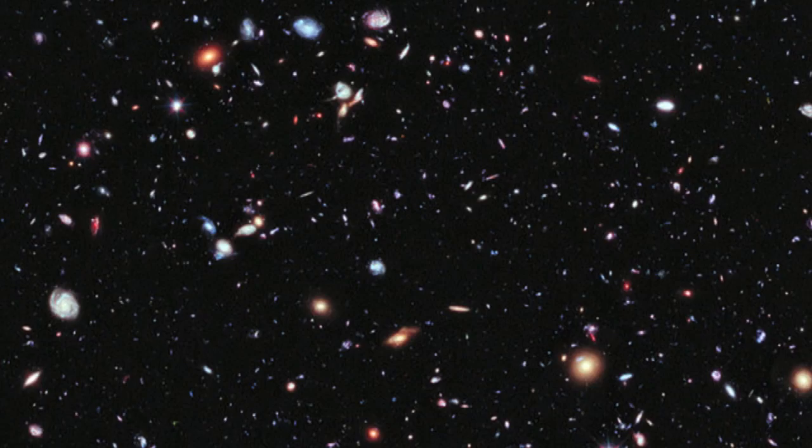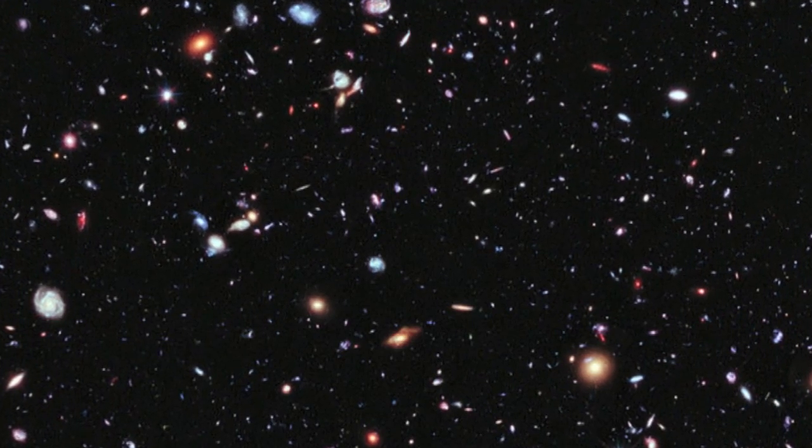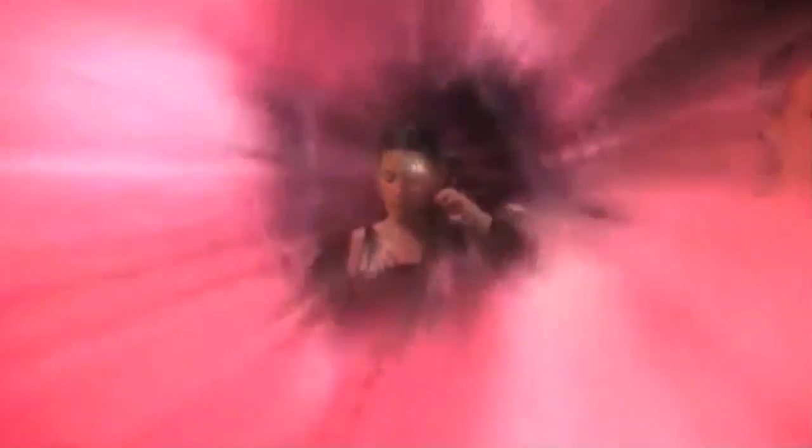If string theory turns out to be an accurate description of the universe, we would have a single piece of mathematics that is capable of describing electrons and atoms, is capable of describing light and the force of gravity and the nuclear forces, a single set of equations. So if string theory is right, it basically says our entire reality is just an amazing symphony.